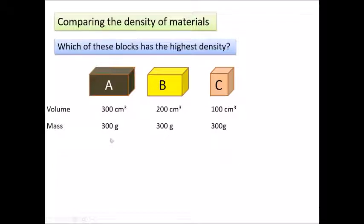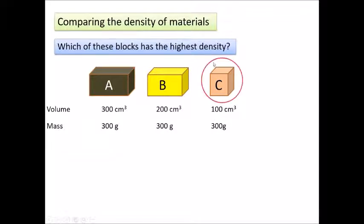If we look at this example, we've got the same mass for each block — which one has the highest density? It's going to be the one where that mass comes in the smallest volume. So in this case, C has got the highest density.